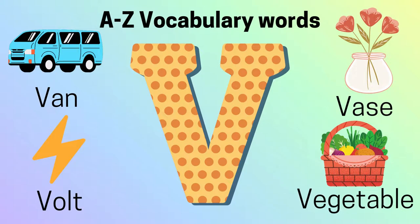Letter V. V-A-N, Van. V-O-L-T, Volt. V-A-S-E, Vase. V-E-G-E-T-A-B-L-E, Vegetable.